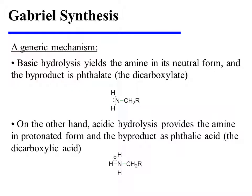There is a slight difference between the two methods. Basic hydrolysis yields the amine in its neutral form, and the byproduct is phthalate, the dicarboxylate. On the other hand, acidic hydrolysis provides the amine in protonated form and the byproduct as phthalic acid, the dicarboxylic acid.